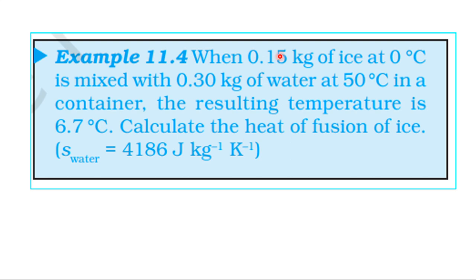So we have ice of 0.15 kilogram and water of 0.3 kilogram at 50 degree centigrade in a container. The resulting temperature is 6.7 degree centigrade. Ice is at 0 degree centigrade.